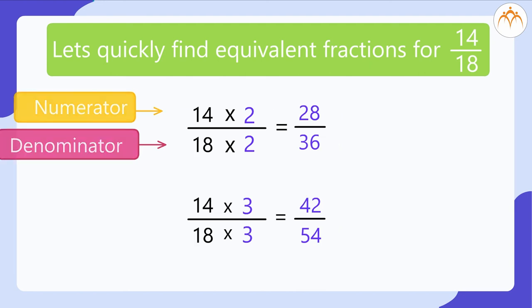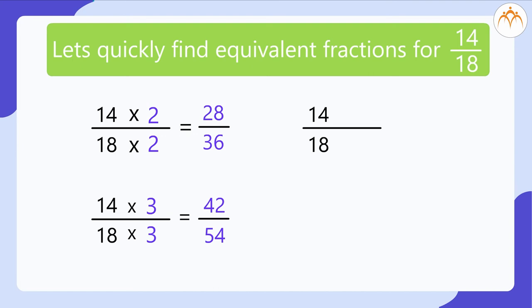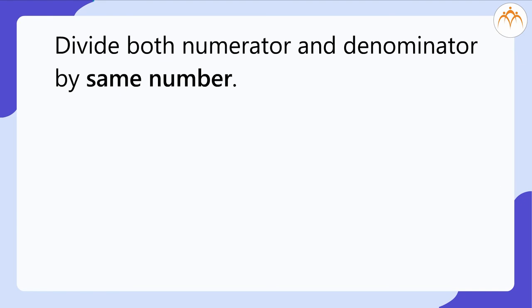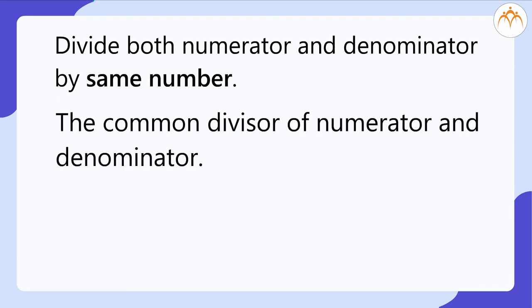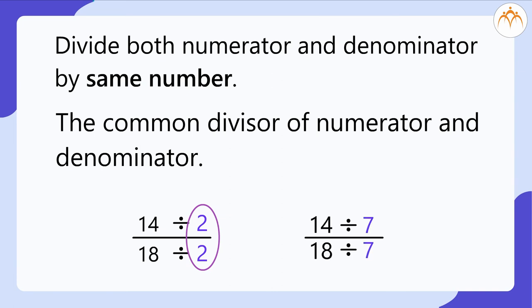Now let us find the equivalent fraction of 14 divided by 18 by dividing both numerator and denominator by the same number — say by 2: 14 ÷ 2 divided by 18 ÷ 2 equals 7 divided by 9. It is very important to note that to divide both numerator and denominator by the same number, we need to find a common divisor. For example, 2 is a common divisor of 14 and 18, so we could divide both by 2. Whereas 7 is a divisor of 14 but not 18, so we cannot divide both numerator and denominator by 7.